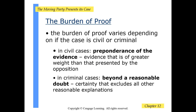The burden of proof varies depending on whether the case is civil or criminal. In civil cases, the main burden of proof is preponderance of the evidence — evidence of greater weight than that presented by the opposition, something like 50 plus 1 percent. In criminal cases, it is beyond a reasonable doubt — certainty that excludes all other reasonable explanations, which is much closer to a 100 percent burden of proof.